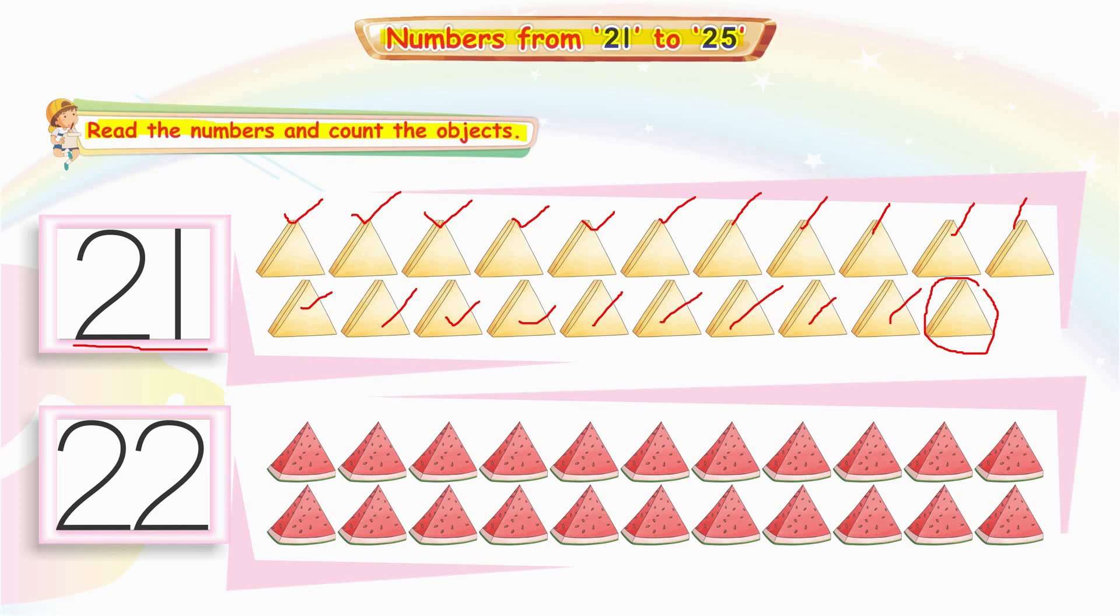Next count the watermelon slices. 1, 2, 3, 4, 5, 6, 7, 8, 9, 10, 11, 12, 13, 14, 15, 16, 17, 18, 19, 20, 21 and 22.